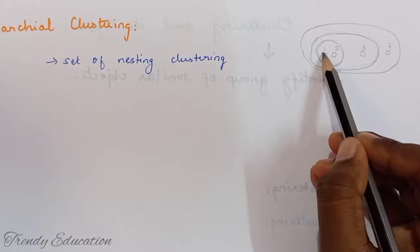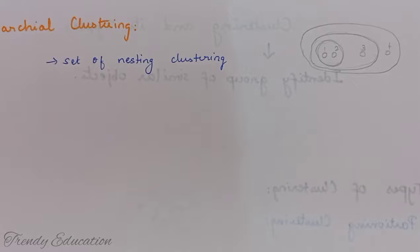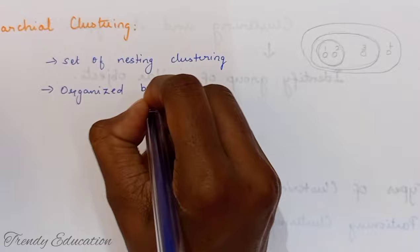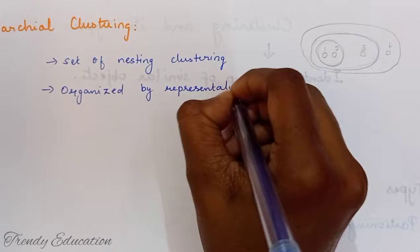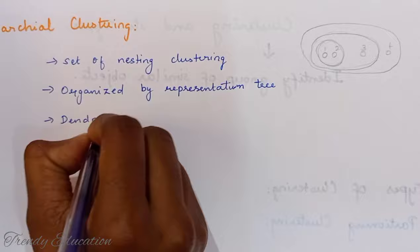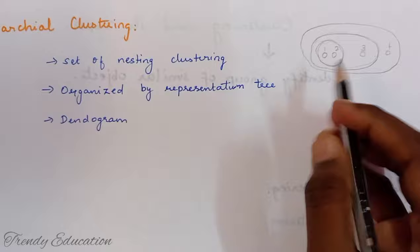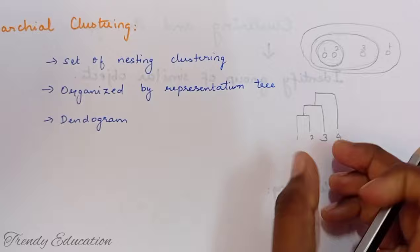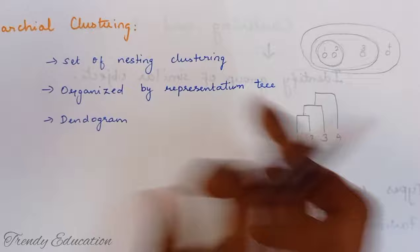Hierarchical clustering is also organized by a tree-like representation called a dendrogram. In the dendrogram, objects one and two are clustered together first, then that cluster merges with three, and again merges with four. This tree structure of nested clusters is what we call a dendrogram.